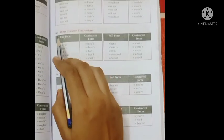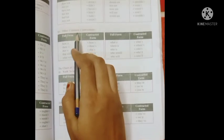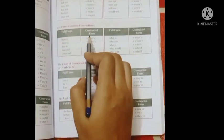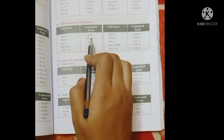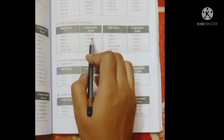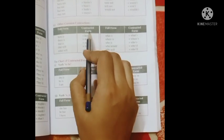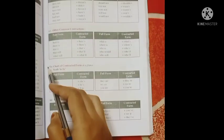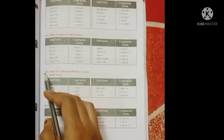Now come to this next part C: other common contractions. Here is, here's. There is, there's. Look, the letter of the verb is omitted here and apostrophe is used here. Okay, now come to this next part, the chart of...